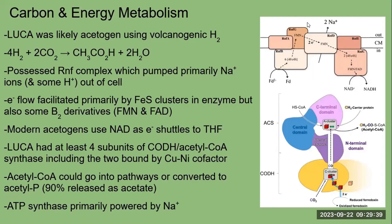What was the energy metabolism of LUCA like? It was tightly intertwined with its carbon metabolism, as LUCA was an acetogen, which used hydrogen emitted by volcanic vents to reduce carbon dioxide to acetate in order to produce energy. It possessed an RnF complex, also used by contemporary acetogens. This takes electrons from ferredoxins, which pass through a series of iron-sulfur clusters to an NAD, and the energy from the flow of electrons is used to pump ions out of the cell — most of these ions would be sodium, but some would be protons as well. Apart from iron-sulfur clusters, some vitamin B2 derivatives — FMN and FAD — along with methylene tetrahydrofolate dehydrogenase, are used to facilitate the flow of electrons through the RnF complex. These may have once been used as cytoplasmic electron carriers that became bound to the enzymes. As time passed, the pathway would have become more specialized until only NAD was used as a cytoplasmic carrier.